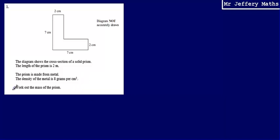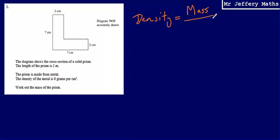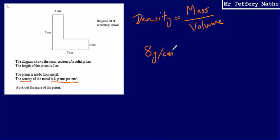We're asked to work out the mass of the prism. The first thing we're going to need to do is recognise the relationship between density, mass and volume. Density is equal to mass divided by volume. The only bit of information we're told is that the density of the metal is 8 grams per centimetre cubed, so 8 grams per centimetre cubed is equal to the mass divided by the volume.